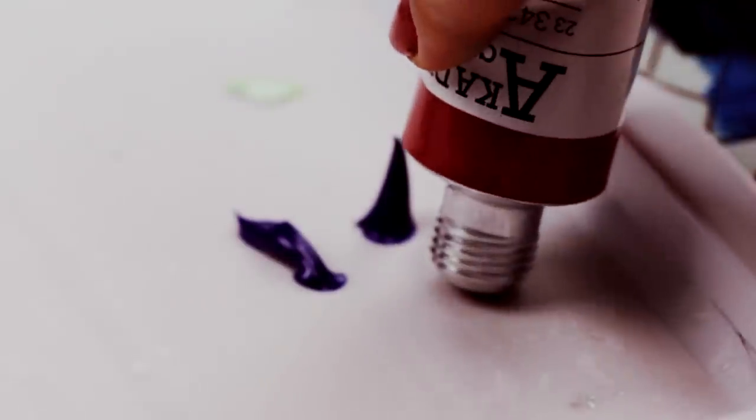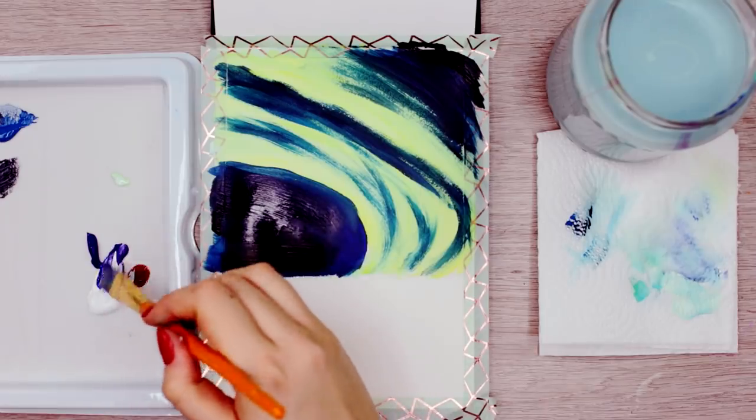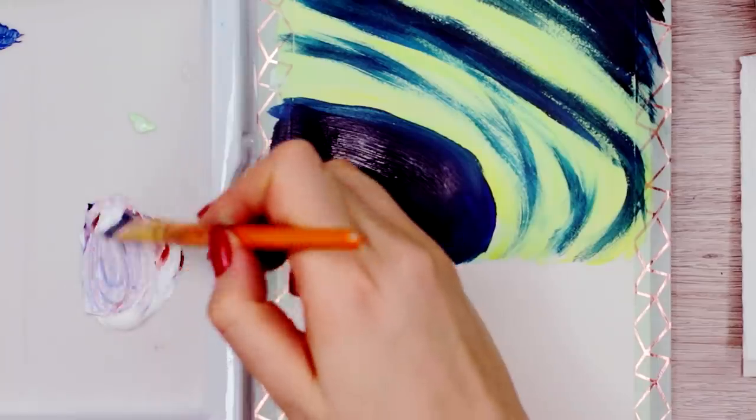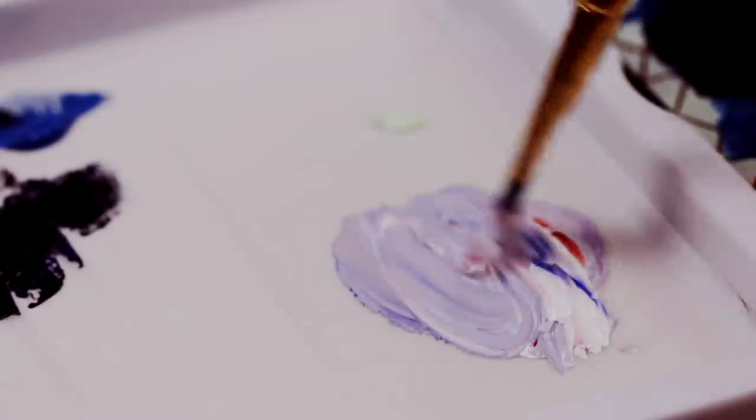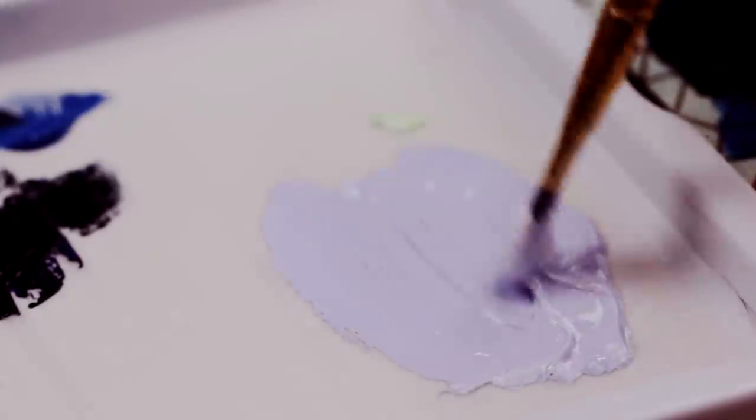To create the shade for the snow, I'm going to mix some alizarin crimson hue, ultramarine and lots of white paint. If you don't have the exact red shade, look for a red shade that you have that is biased slightly more towards purple than towards orange on the color wheel. I added a little bit more white paint to the mixture to make it even softer and we get this beautiful pale lavender color.